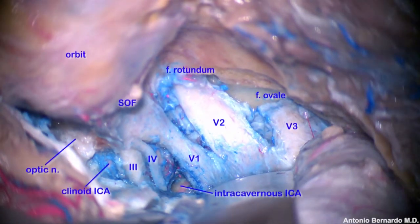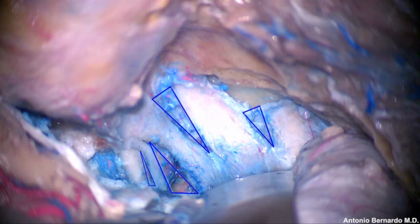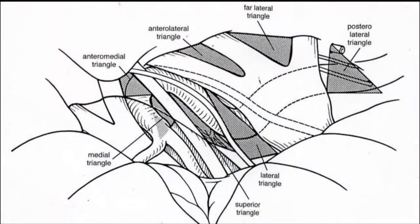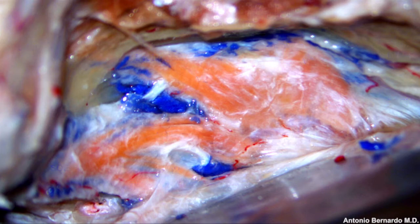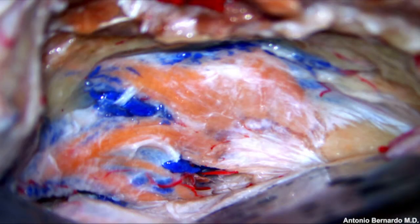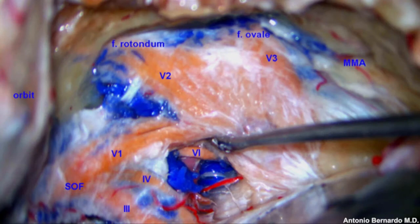The lateral wall of the cavernous sinus is completely visible, and from superior to inferior one can see the optic nerve, the paraclinoid space, the oculomotor, the trochlear, V1, V2, V3, and the gasserian ganglion. The most common triangles are the superior, the lateral, the far lateral, and the anterolateral. V1 can be followed all the way down to the superior orbital fissure, V2 to the foramen rotundum, V3 to the foramen ovale. The middle meningeal artery is cut at the foramen spinosum.